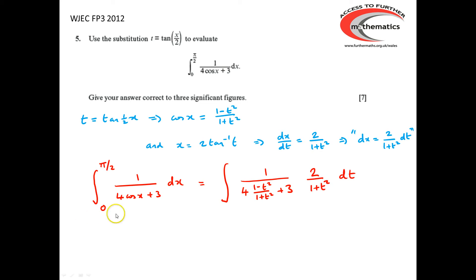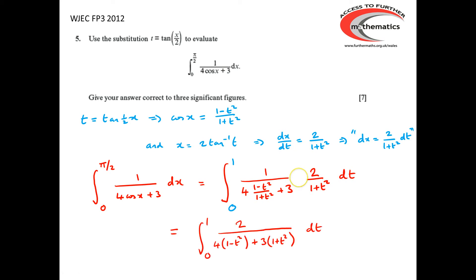We need to think about the limits. When x is 0, t is tan(½ × 0), which is 0. When x is π/2, t is tan(π/4), which is 1. We've got a rather complex expression, but this can be simply simplified by multiplying the tops and bottoms of the two fractions. We end up with 2 on the top, and 4 lots of (1 minus t²) plus 3 lots of (1 plus t²) on the bottom, which simplifies to 2 over (7 minus t²) to be integrated.